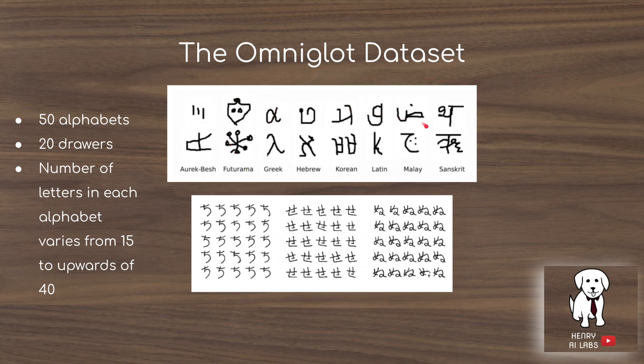You're given different characters - there's 50 alphabets, and in each alphabet there's usually 15 to 40 different characters. Then 20 different people draw the characters, and that's all you have to use as labels to classify a new image of a character and which character in the alphabet it's most similar to.